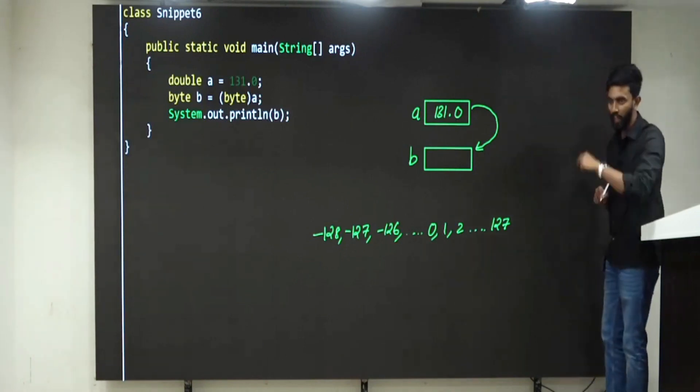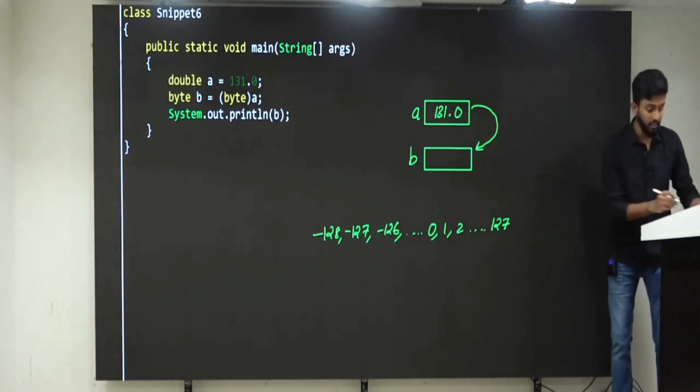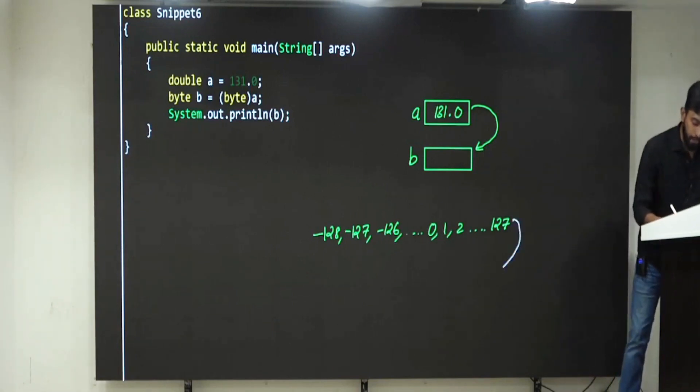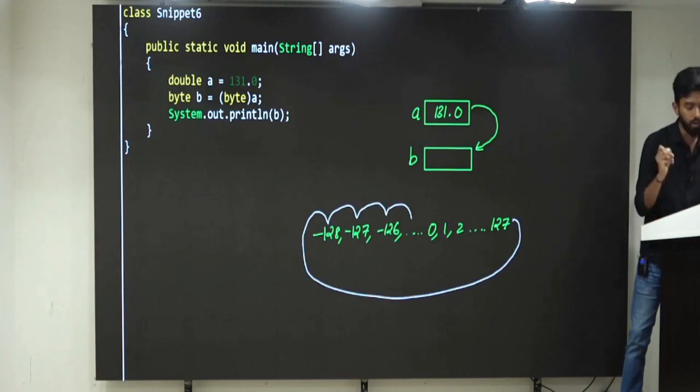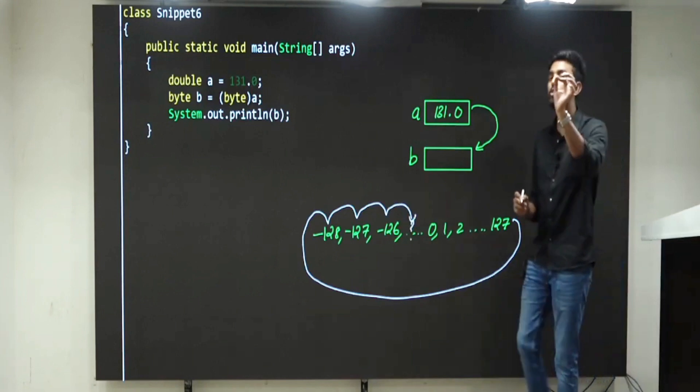Four values. Will I get error? No. Instead, I will wrap back. 1, 2, 3, 4. Ah, what is this fourth value? Minus 125.